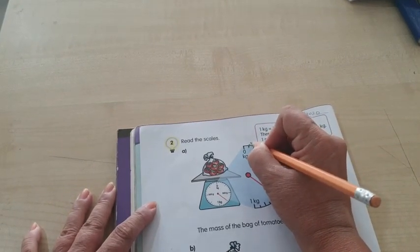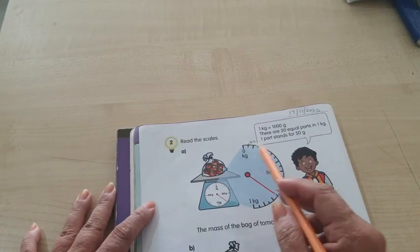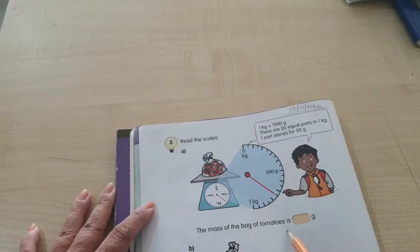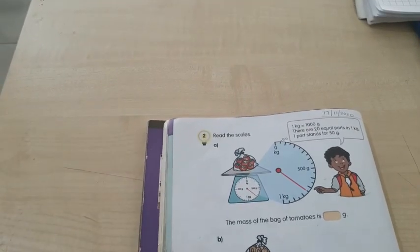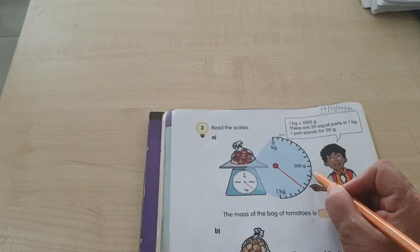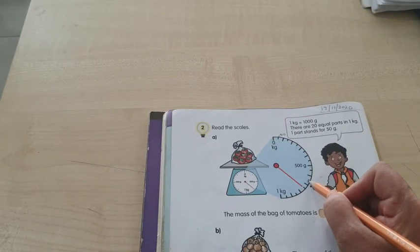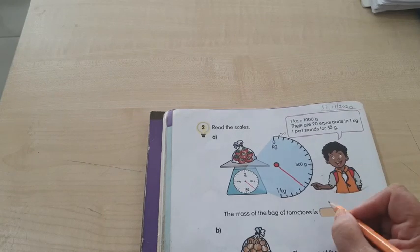Now, the mass of the bag of tomatoes is what? So let's count. This is 500, 550, 600, 650, 700, 750. So it is 750 grams.